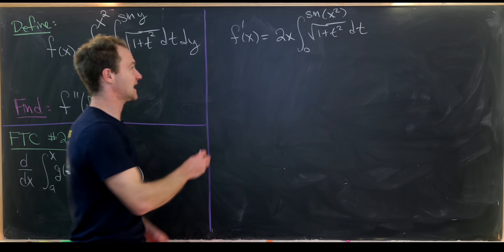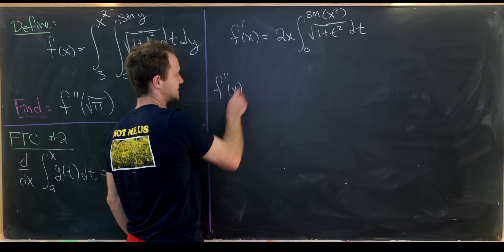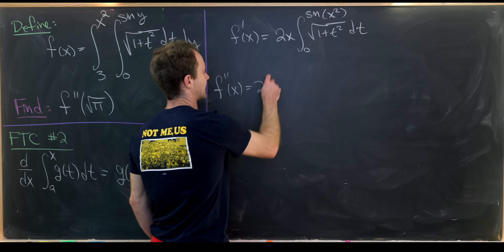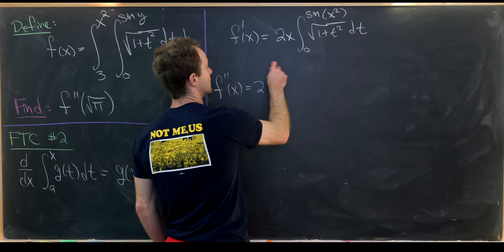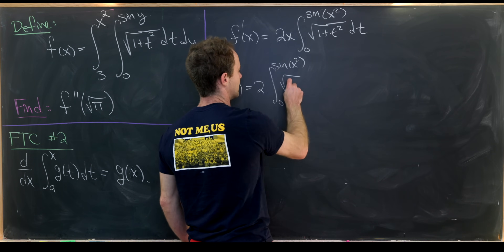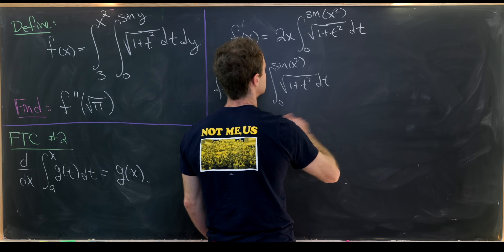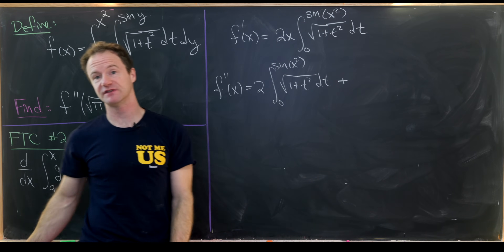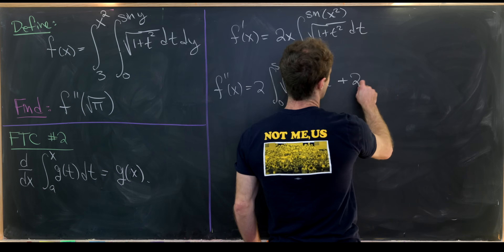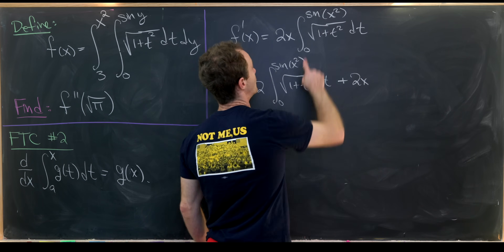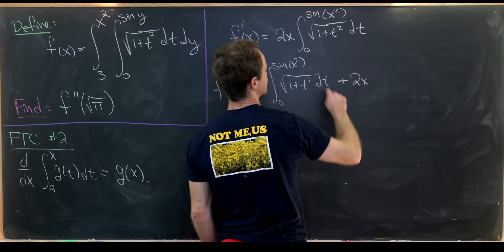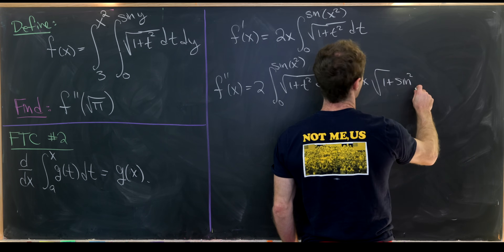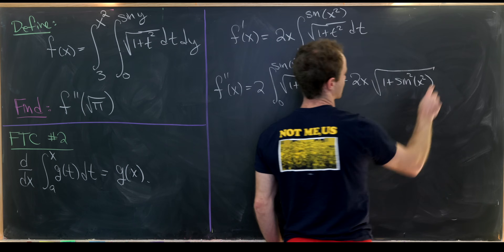Now we take the second derivative, using both the product rule and the chain rule. The product rule has us take the derivative of 2x first, giving 2, times the integral from 0 to sine of x squared of the square root of 1 plus t squared dt. Then we add 2x times the derivative of the other factor, applying FTC Part 2: we plug sine(x²) into the square root of 1 plus t squared, giving the square root of 1 plus sine squared of x squared.